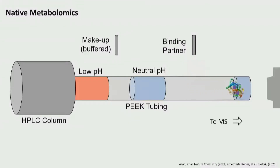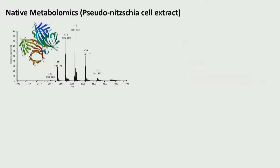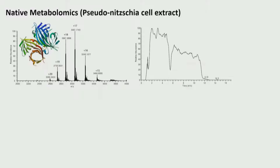We first tested this with streptavidin as a very simple target protein, using some cell lysates. What you can see here is the intact protein spectrum. We extracted an extracted ion chromatogram of one of the most abundant charge states.